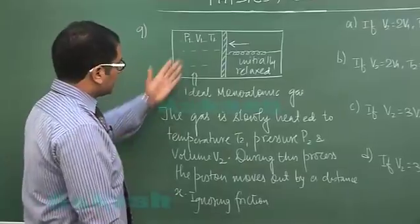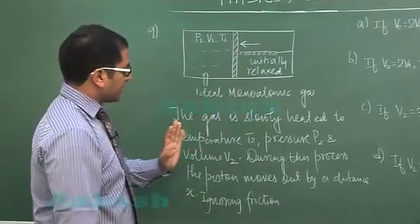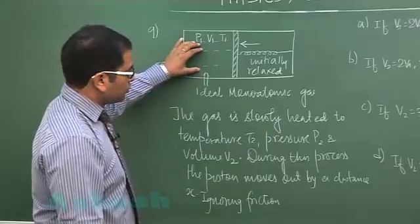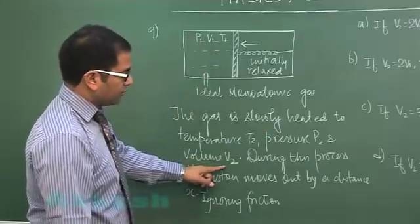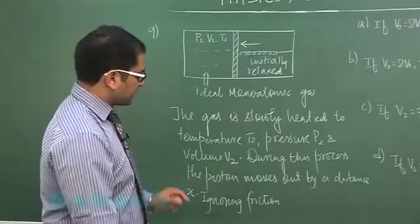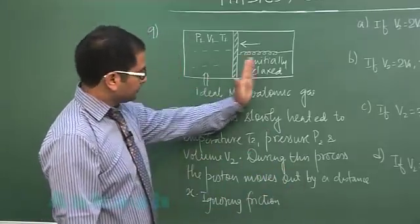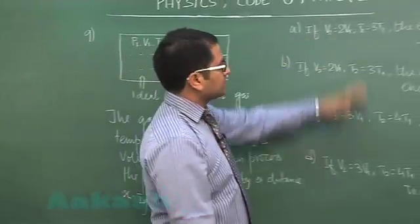This side it is ideal monoatomic gas. Now the gas is slowly heated to temperature T2, pressure P2, and volume V2. During this process the piston moves out by a distance x, ignoring friction. These are the conditions given.